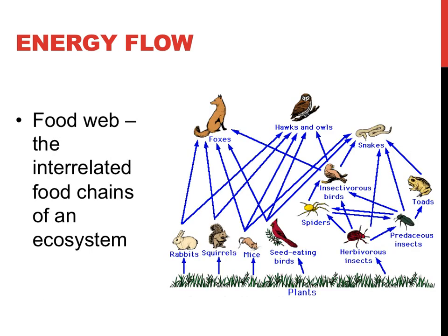While a food chain may provide a simplistic overview of what eats what in a community, few organisms utilize a single food resource. So a food web is a more realistic way to show all of the complex interactions found within communities. Using spiders in this picture for an example, not only do they eat herbivorous insects and predaceous insects, but predaceous insects and insectivorous birds also eat them.